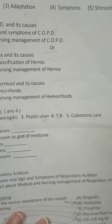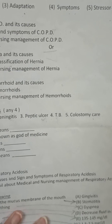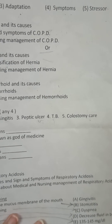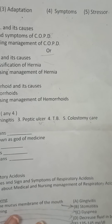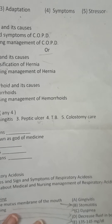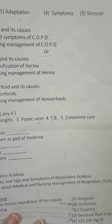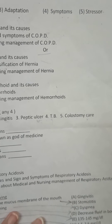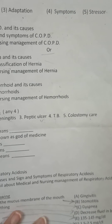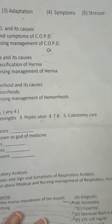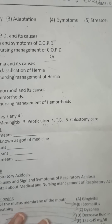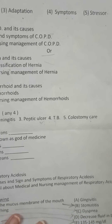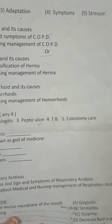Colostomy was discussed in the GI system during management of intestinal obstruction. Colostomy is a surgical procedure where a part of the large intestine is cut through the abdominal wall. Write all the stoma and pouch care details.